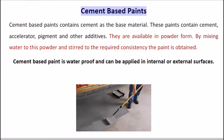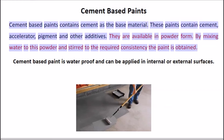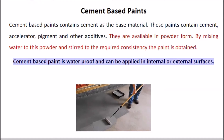Cement-based paints contain cement as the base material. These paints contain cement, accelerator, pigment, and other additives, and are available in powder form. By mixing water to this powder and stirring to the required consistency, the paint is obtained. Cement-based paint is waterproof and can be applied on internal or external surfaces.